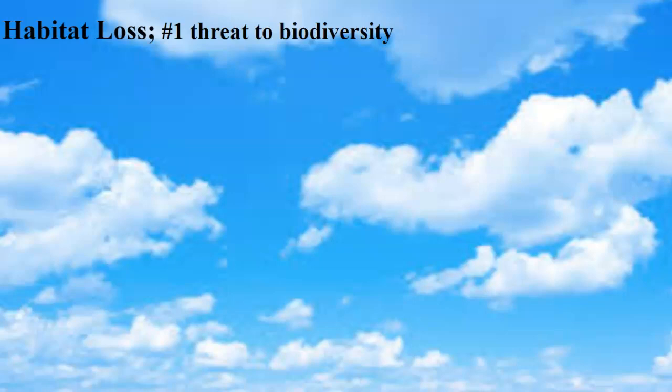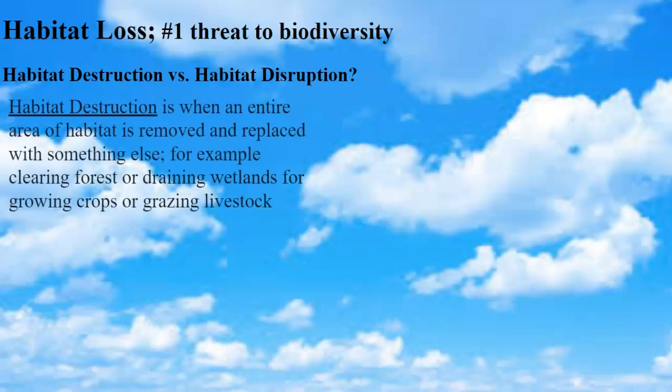Habitat loss is the number one threat to biodiversity. We can talk about habitat destruction versus habitat disruption — they're similar, but one is more severe. Habitat destruction is when an entire habitat is removed and replaced with something else — for example, clearing a wetland or plowing up prairie to grow crops. Deforestation, clear cutting forest for timber and then raising crops there, is another example.